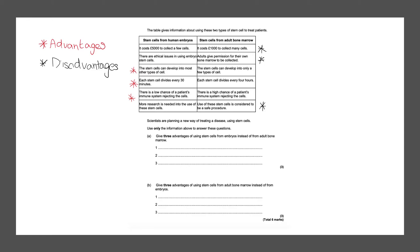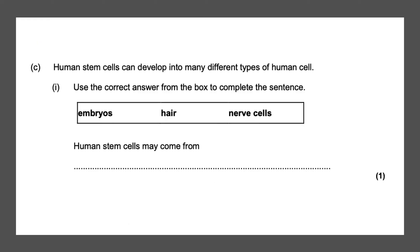The next question is again a list question giving three advantages of stem cells from human embryos and three advantages of stem cells from adult bone marrow. Three advantages of embryonic stem cells are: they can develop into most other types of cells, each stem cell divides every 30 minutes, and there is a low chance of the patient's immune system rejecting the cells. Three advantages of adult bone marrow are: it costs a thousand pounds to collect many cells, adults give permission for their own bone marrow to be collected, and the use of these stem cells — giving you six marks in total.